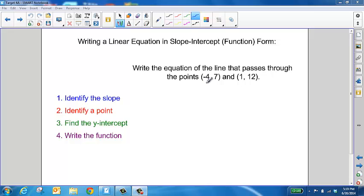You may want to label your points with x1, y1, and x2, y2. That way, when you go through and find the slope, you can use the slope formula, which is y2 minus y1 over x2 minus x1.